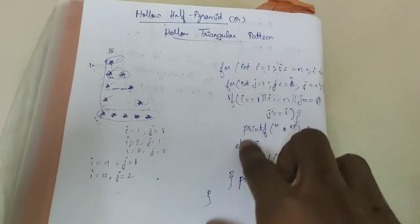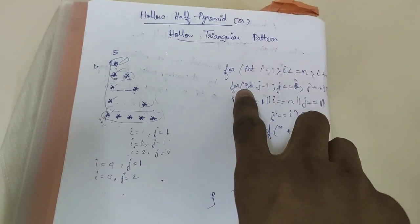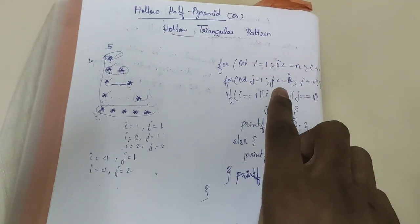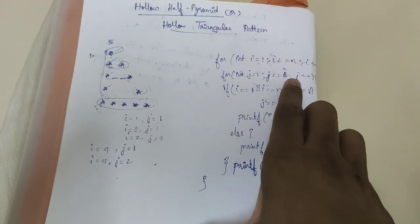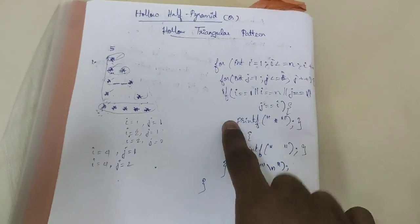And inside, the inner for loop: for j equal to 1, j less than or equal to i, j plus plus. And I am executing the condition for printing star and spaces.